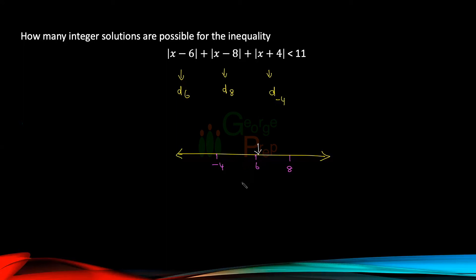But if I do that, still this will give me the minimum value, the difference between minus 4 and 8. So the minimum value of this expression is going to be the distance between minus 4 and 8, which is 12 units.